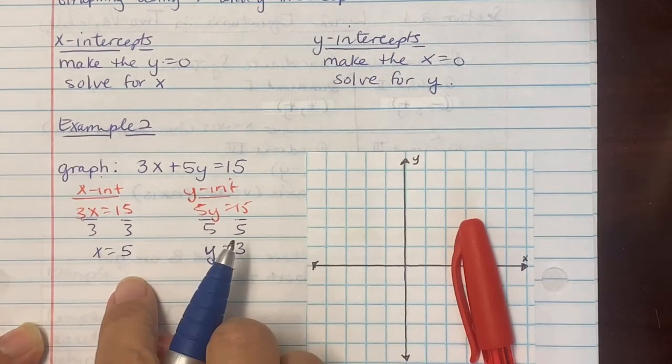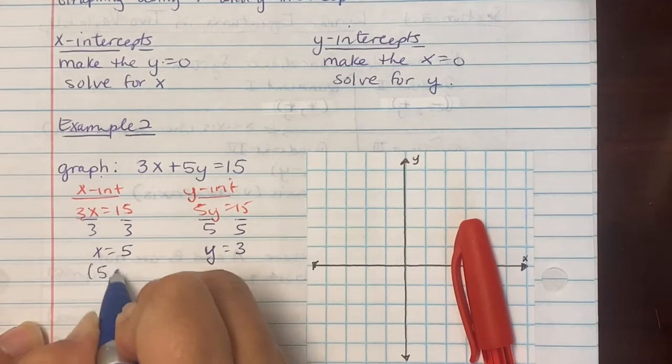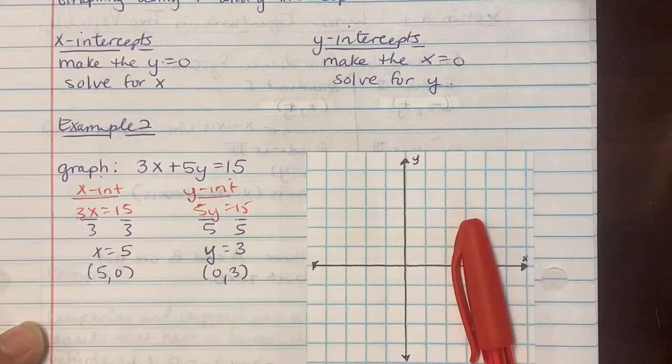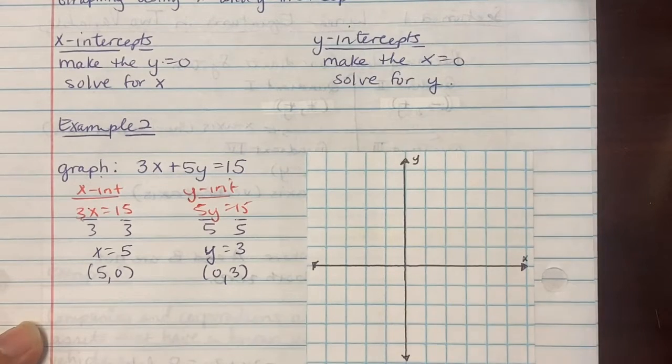So we get x equal to 5 and the y value equaling 3. So we're not plotting x equal to 5 and y. Make sure it's an ordered pair. So you're going to say (5, 0) for the x intercept, (0, 3) for the y intercept. These are your two ordered points that you're going to plot in your x, y coordinate plane to get your graph.